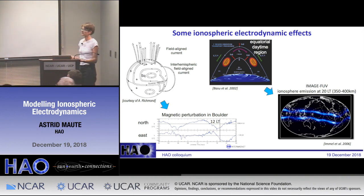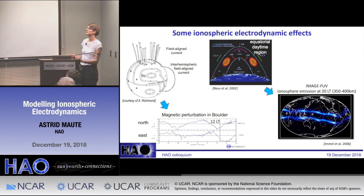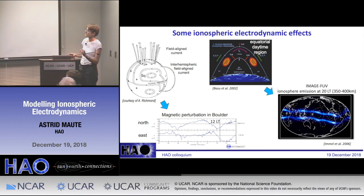Here is a depiction of the effects of ionospheric electrodynamics — can we actually measure it and how? On the left you see a schematic of the Earth. This is the daytime, and these bands here are currents flowing on the day side. Neutral winds push the plasma through the magnetic field, setting up current and electric field. The main current flows at daytime at 110 kilometers, creating these vortices. At high latitude, it's different — it's coupled to the magnetosphere.